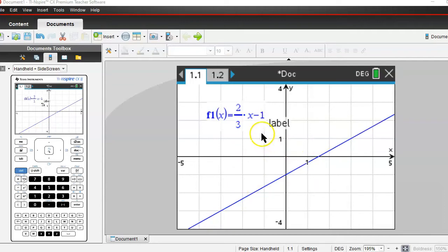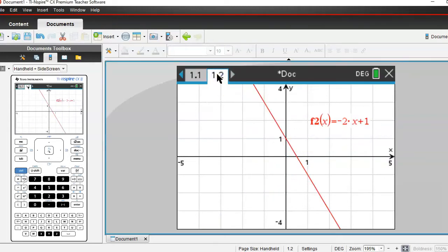Ladies and gentlemen, the two-thirds that I see here is the slope that I see reflected on my line as well. So where is this minus one coming from? Where did I start counting my two-thirds? I started counting right here, which on the y-axis is at negative one.